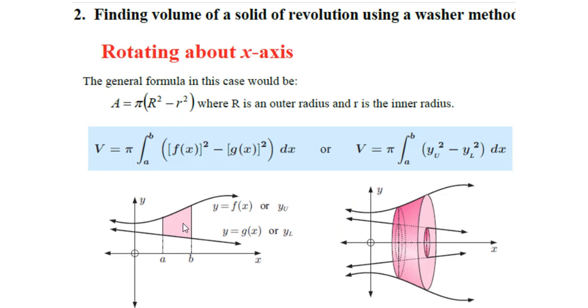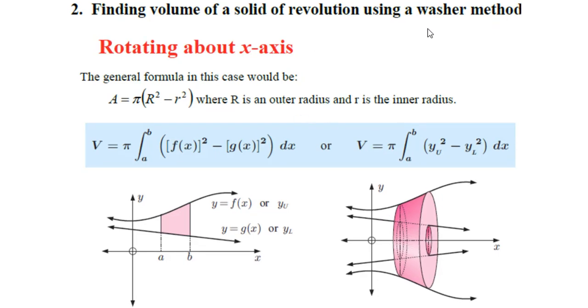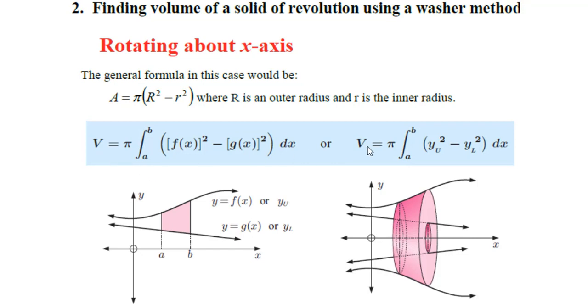If the shaded area bounded by two functions is rotated across the x axis, the volume we can figure out by using washer method. For the washer method you need to figure out the volume of a solid got by outer function rotating across the x axis minus the volume of the solid got from inner function rotating across the x axis. Here is the formula for the washer method.